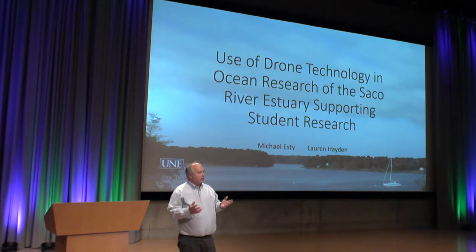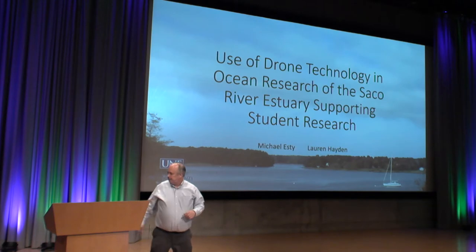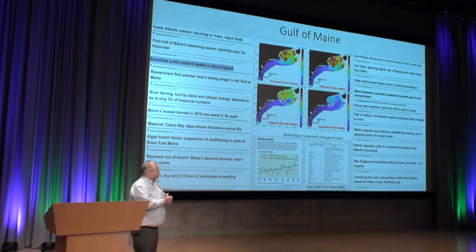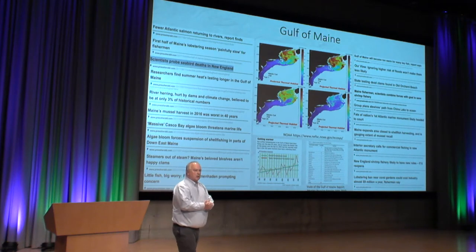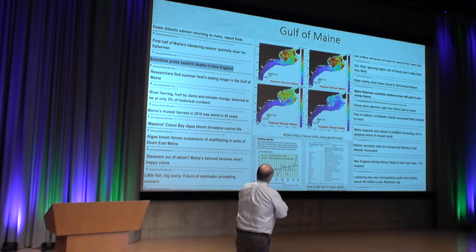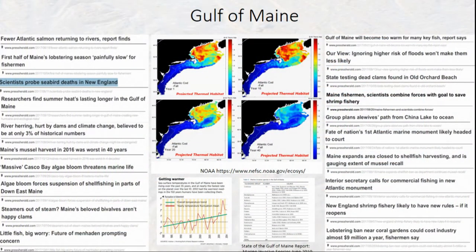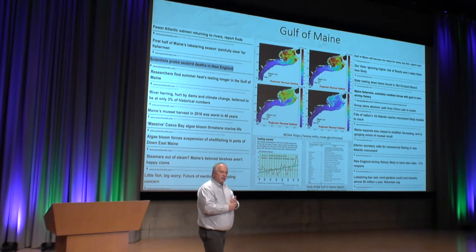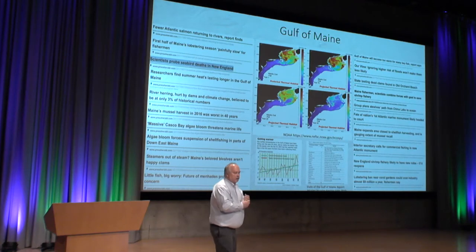The estuary is located right outside our university. The Gulf of Maine is going through some pretty radical changes lately. Lobsters are moving north, the cod are actually moving north from the Gulf of Maine, and a lot of cod, haddock, and valuable fishing species are moving north. We're having certain algae blooms causing shellfish recalls, and problems with clams and many fisheries in the Gulf of Maine.